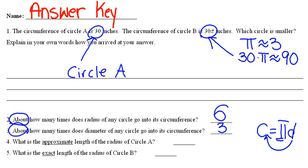Number four, what is the approximate length of the radius of circle A? If we know that the radius goes into circumference about 6 times, we have to figure out what number goes 6 times into 30. And that number is 5.